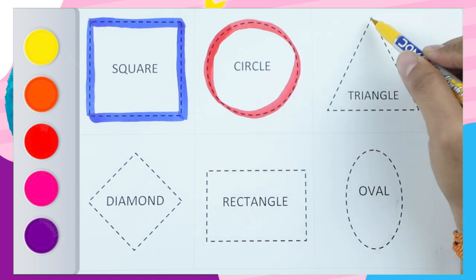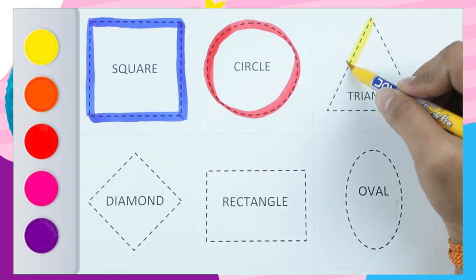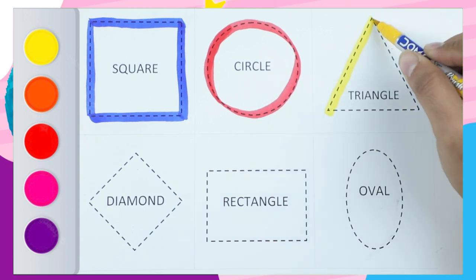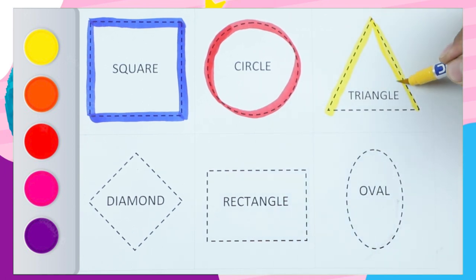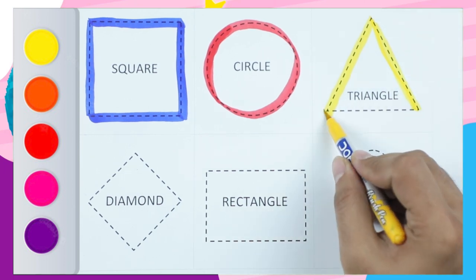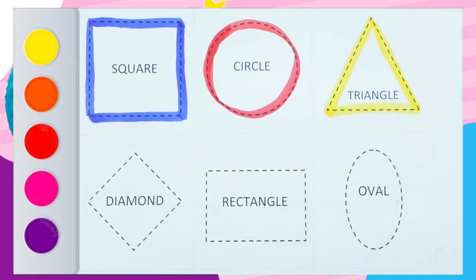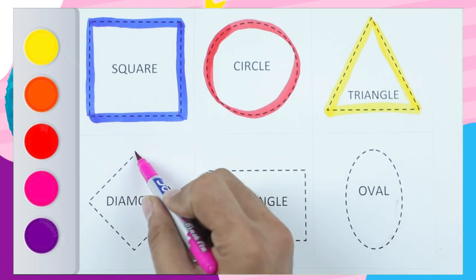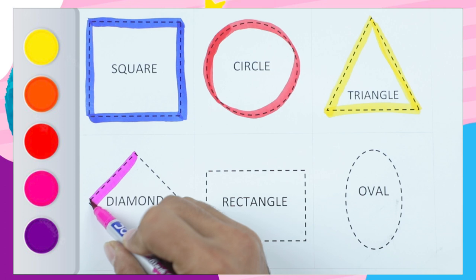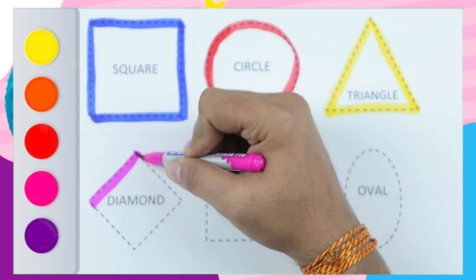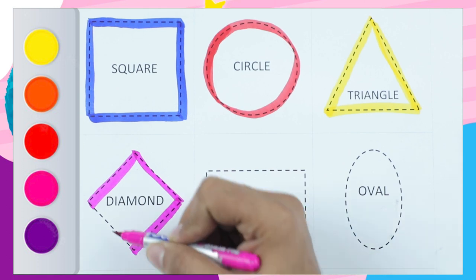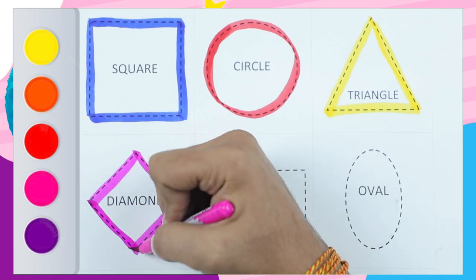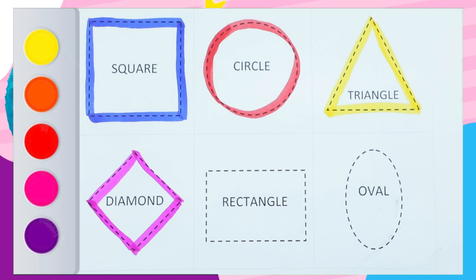Yellow color triangle — sliding line, sliding line, and sleeping line — it's a yellow color triangle! Diamond shape — pink color diamond shape — sliding line, sliding line, sliding line — it's a pink color diamond shape!